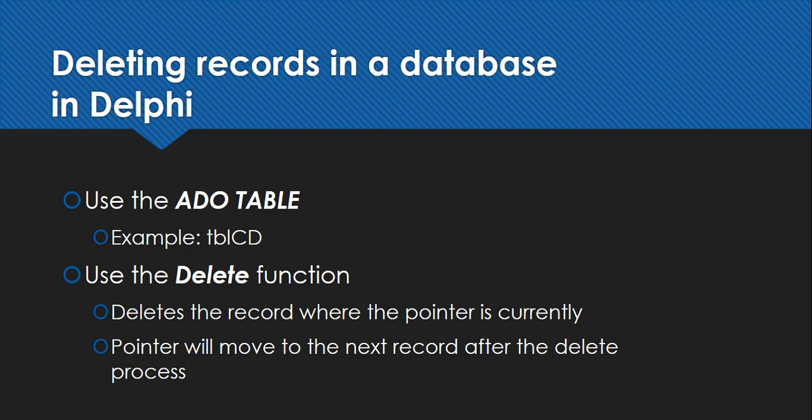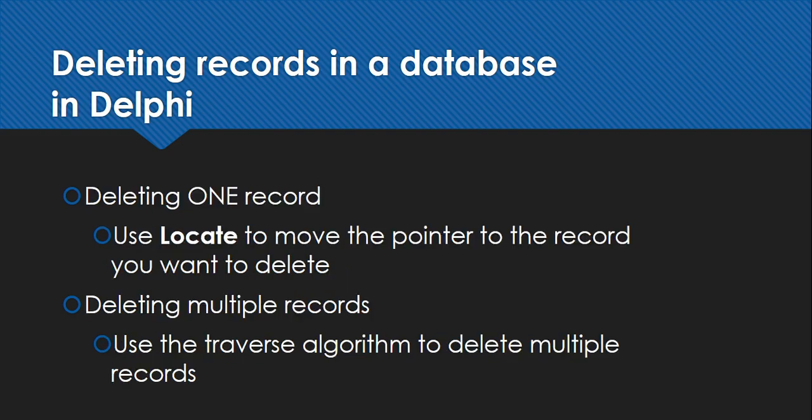So it's very important to make sure you move the pointer to the correct place. Whenever you're doing changes to a database, it's advisable to make a copy of it first, so that if you make a mistake you can get the original back. Also be aware: when you do delete a record, the pointer will automatically move to the next record after the delete, because the pointer has to be at a valid record.